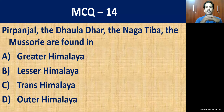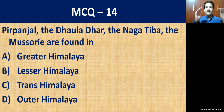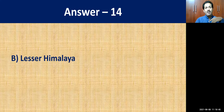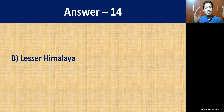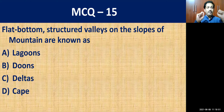MCQ question number fourteen: Pir Panjal, Dhaola Dhar, Nagtibba, and Dhauladhar are found in — where? They are all peaks of the Lesser Himalaya.